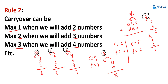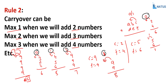When adding four numbers, carry can be 0, 1, 2, or 3 — maximum 3. For example, 9 plus 9 plus 9 plus 9 equals 36 — 6 in the units place and carry 3 to the tens place. So: maximum carry 1 when adding 2 numbers, maximum 2 when adding 3 numbers, maximum 3 when adding 4 numbers. This is Rule 2.